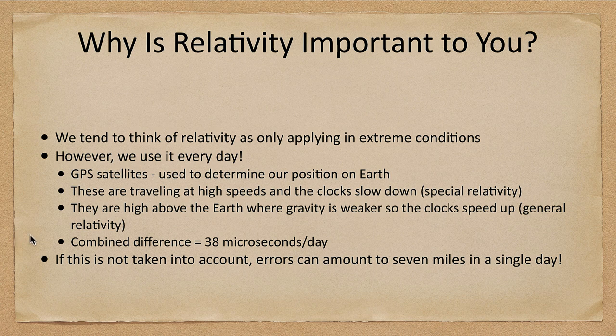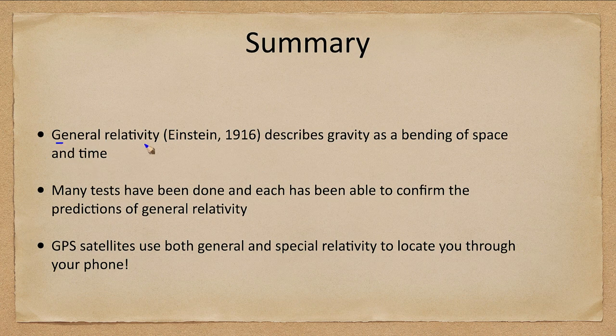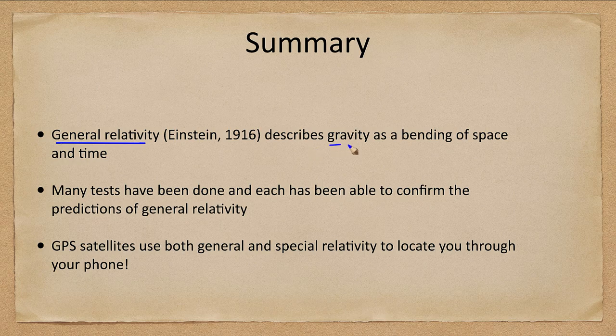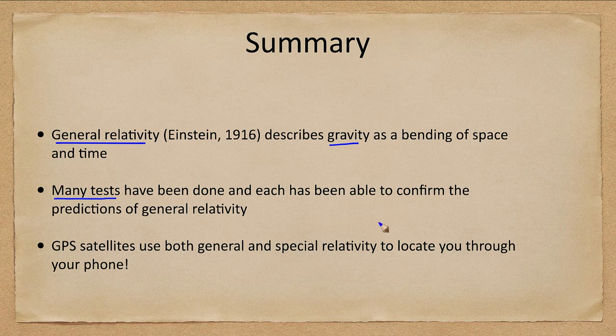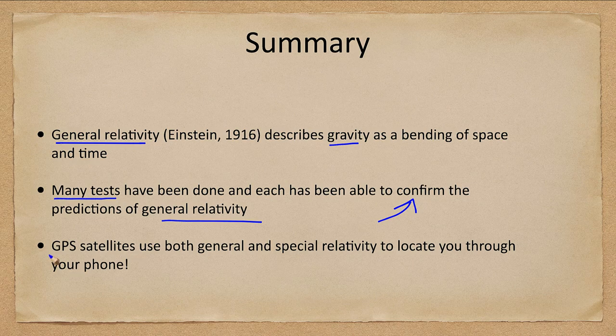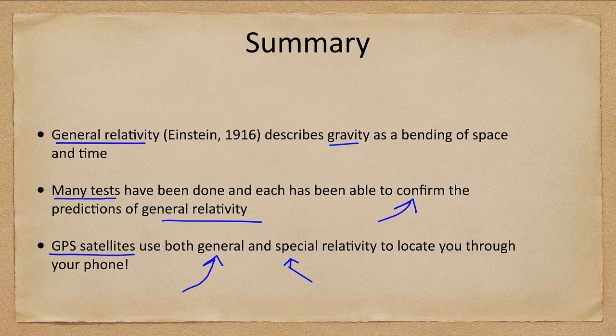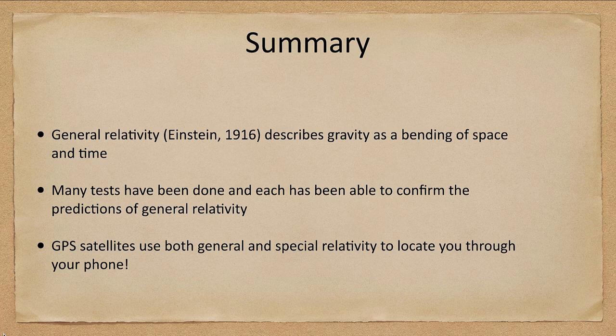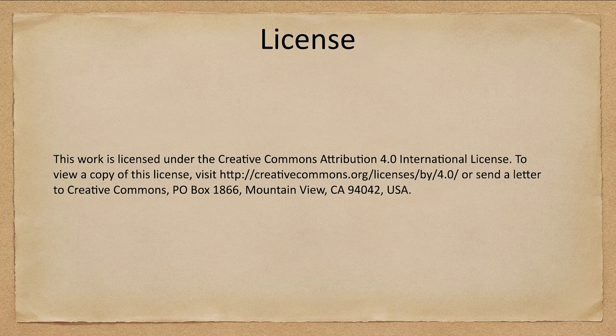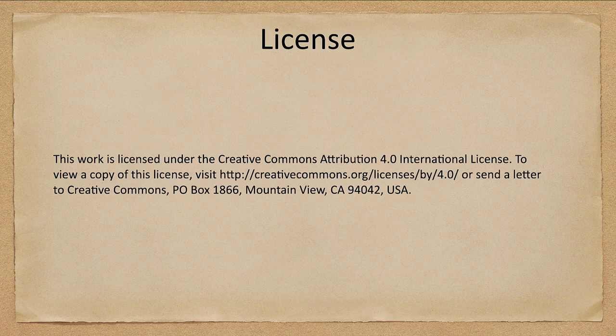So let's go ahead and finish up with our summary. What we've looked at this time: we talked about general relativity, which describes gravity as a bending of space and time. We talked about many of the tests that have been done, and each so far has confirmed the predictions of general relativity. And we mentioned an example in GPS satellites, which use both general and special relativity to locate you through your phone. So that concludes this lecture on general relativity. We'll be back again next time for another topic in astronomy. Until then, have a great day everyone, and I will see you in class.